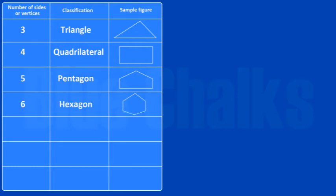When there are seven sides or vertices, it is a heptagon, whereas if there are eight, it is an octagon.